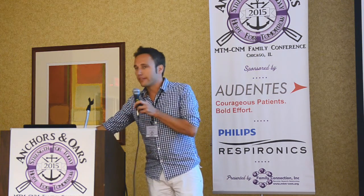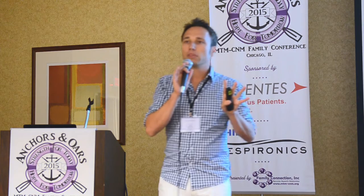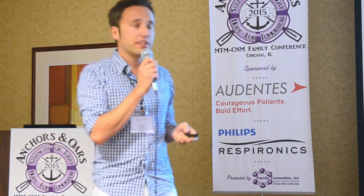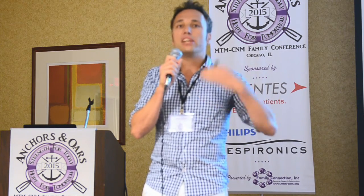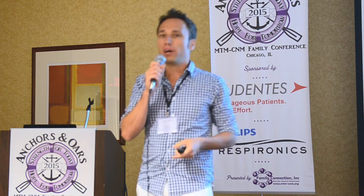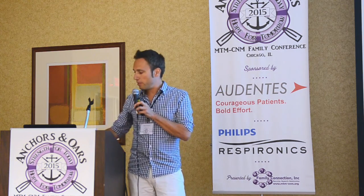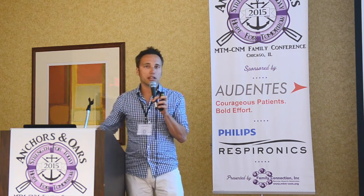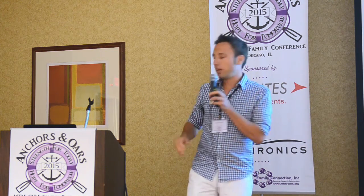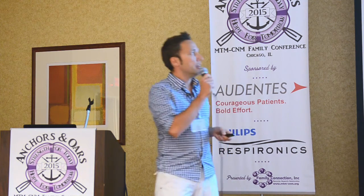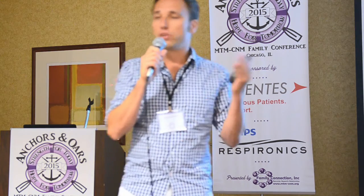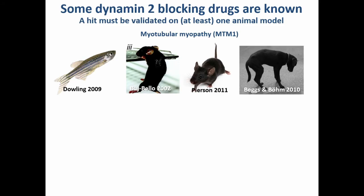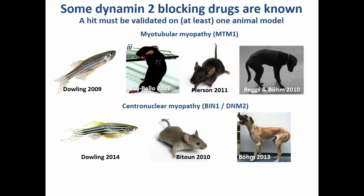We are currently trying different drugs that block Dynamin-2 at the protein level. Known drugs exist that block Dynamin-2, and we are testing them in the petri dish to see if they can slow down Dynamin-2 and treat patients with myotubular and centronuclear myopathy as effectively as the mouse results. Once we have a hit, we will validate on animal models — the zebrafish from Jim, two different mouse models, the dog model discovered a few years ago — and similarly for centronuclear myopathy animal models.